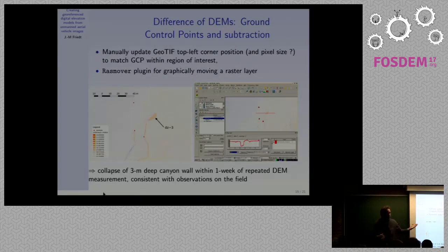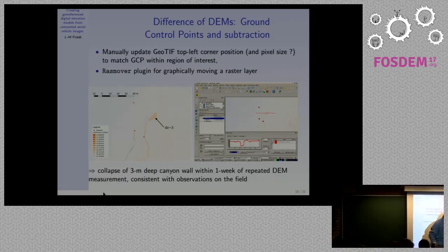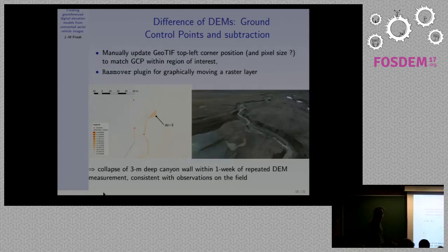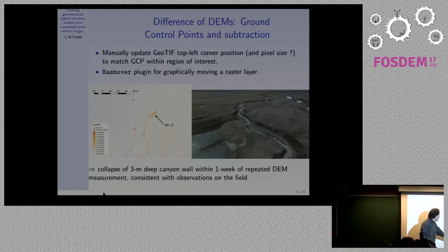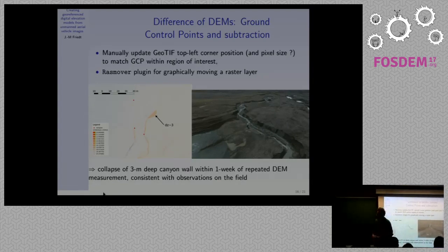Here is an example of subtracting two DEMs acquired one week apart. During this time interval there was a big flood. Here is the channel where the river is flowing, and in the subtraction I see a dip of about three meters deep. Does this match reality? I didn't make a field check, but this is the kind of canyon where the river carved its path in the moraine I'm interested in — and indeed that's roughly three meters high. It matches what can be expected from heavy flooding in the brittle moraine material where landslide has created this digital elevation model difference.